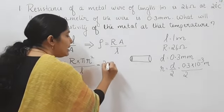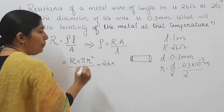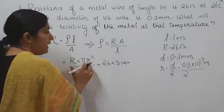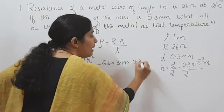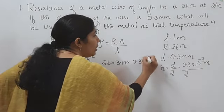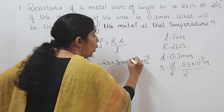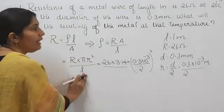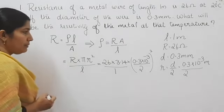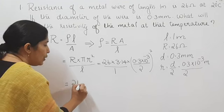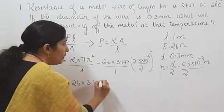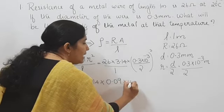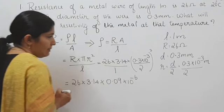Resistance R is equal to 26 ohm, pi is equal to 3.14, and radius R is equal to 0.3 millimeter, so 0.3 into 10 raise to minus 3 divided by 2, the whole square. We get 0.09 into 10 raise to minus 6, divided by 4.